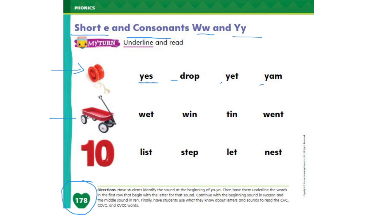Now let's take a look at the second picture. This is a wagon. We need to underline the words that begin with W like wagon. Okay, the words are: wet, win, tin, went. Go ahead and underline the words that begin with W like wagon.